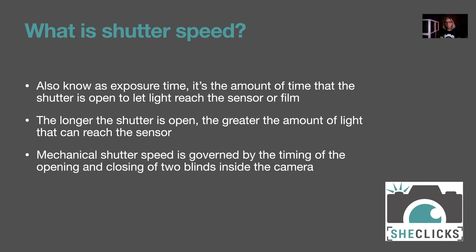A mechanical shutter is governed by the timing of the opening and closing of two blinds inside the camera. A lot of people are surprised it's two blinds — they often think it's just one. If it was just one curtain, the top of the sensor would be exposed for much longer than the bottom, giving you a graduation effect — lighter at top than bottom. So instead, one shutter opens and then another comes down to close it.